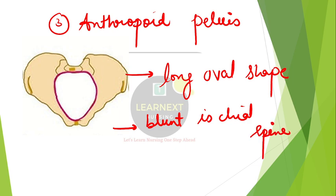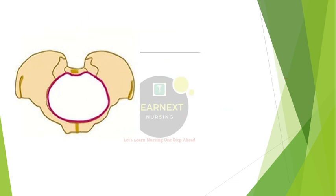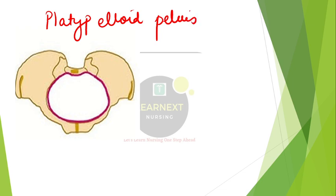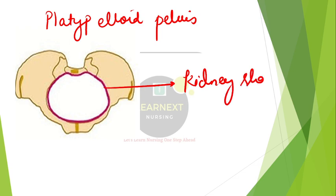The last type of pelvis is the platypelloid pelvis. This is also an abnormal type of pelvis. The shape of the platypelloid pelvis brim is kidney-shaped, and it also has blunt ischial spines.